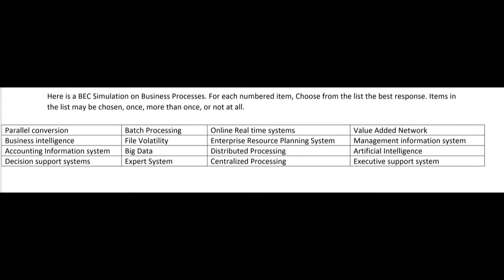Starting with parallel conversion — parallel conversion has to do with the systems development life cycle. When you're ready to implement the new system, one of the choices is to parallel convert, which means you still use the old system at full capacity for a given period while you introduce the new system at full capacity. That's considered a very safe strategy since the old system is still producing output in case there are major problems with the new system, but it's expensive and time-consuming.